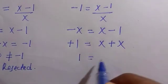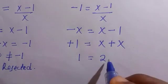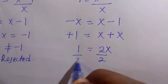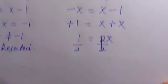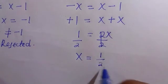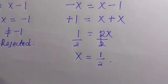So 1 equals x plus x, which is 2x, and we divide by 2 to get the value of x. So we have x equals 1 divided by 2, which is the solution to the value of x.